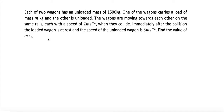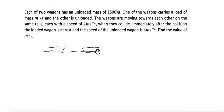Two wagons each have an unloaded mass of 1500 kg. One wagon carries a load of m kg and the other is unloaded. The wagons are moving towards each other. Whenever you have a question like this, please sketch or draw a free body diagram roughly so that you can imagine the scenario — drawing really helps. So I'm going to draw this.